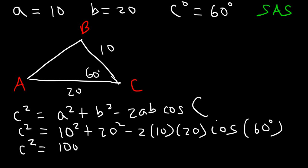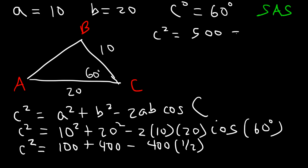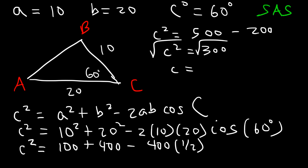10 squared is 100, 20 times 20 is 400, and 2 times 10 times 20 is 400 as well. Cosine of 60 is one half. So 100 plus 400 is 500, and half of 400 is 200. So C squared is equal to 300. Therefore C is the square root of 300, which is 10 root 3, or 17.32.